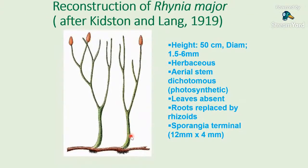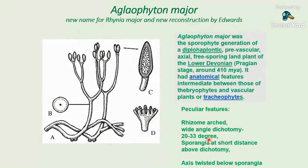The second Rhynia species — Rhynia major — was created by Kidston and Lang in 1919. It was bigger, with height about 50 cm and diameter 1.5 to 6 mm. It was herbaceous, with an aerial stem again dichotomously branched and photosynthetic; leaves absent, roots replaced by rhizoids, and sporangia terminal and larger — 12 mm versus 4 mm. A new name, Aglaophyton major, was placed by Edwards because of lack of true xylem and phloem — they do contain hydroids. Aglaophyton major: the specific epithet is maintained but the generic name has changed.